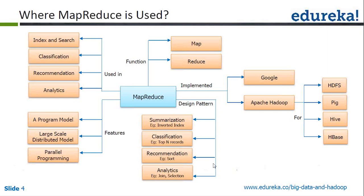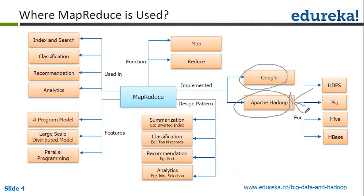MapReduce talks about a lot of components you can use as part of the MapReduce programming framework. MapReduce started as a Google project — it was started off as a BigTable project where Google was using it to page-rank and index search results. Later, the same algorithm was introduced into Apache Hadoop. Ever since, Apache Hadoop has been shipped with MapReduce as the fundamental way of distributed processing. The advantages are it can be used for indexing and searching, classifications, recommendations, and analytics.